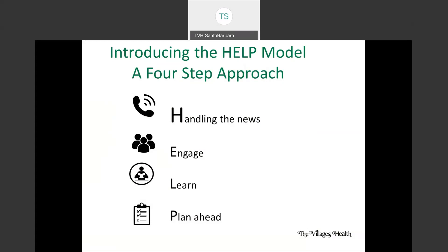I'm going to walk you through a four-step model called HELP. H stands for handling the news — how did you receive it and how are you processing it? E is for engaging: it's important to engage others as you navigate this course. L is for learn, because there are so many things now being discovered about this disease that are helpful to know. And finally, P is for planning ahead, which will be a summary of your next steps.